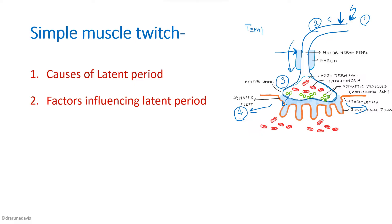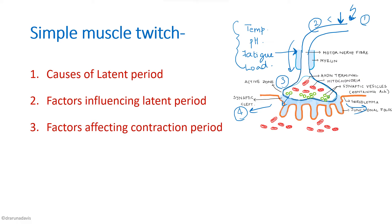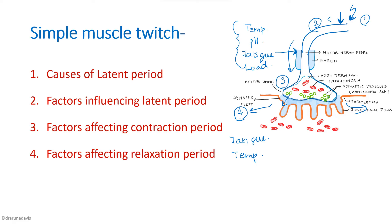Other factors affecting the latent period: an increase in temperature shortens the latent period; an increase in pH increases the latent period; fatigue increases the latent period; and application of load also increases the latent period. For factors affecting the contraction period, fatigue increases the contraction period, and an increase in temperature decreases it. Factors affecting the relaxation period are opposite: fatigue increases the relaxation period, and an increase in temperature shortens it.